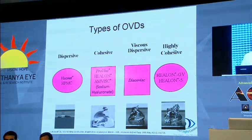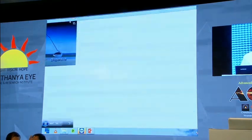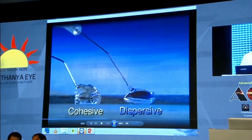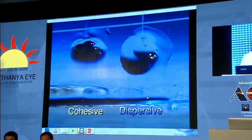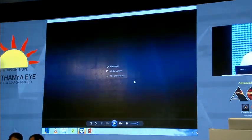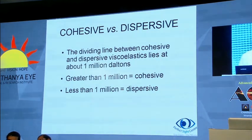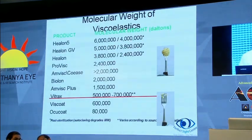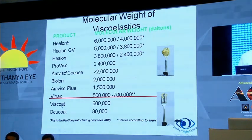The dividing line between cohesive and dispersive viscoelastics lies at about 1 million daltons: greater than 1 million daltons is cohesive, and lesser than 1 million is dispersive broadly. Healon-GV and Healon-5 are more than 1,000 kDa, while Viscoat and OcuCoat (HPMC) are below this threshold. This can be seen in the product comparison table.